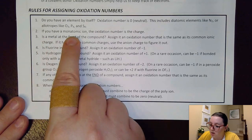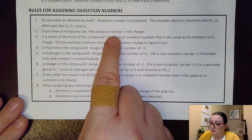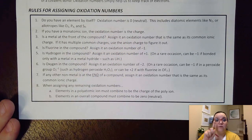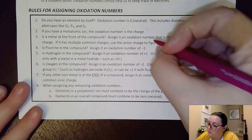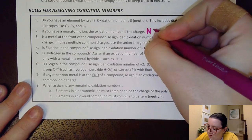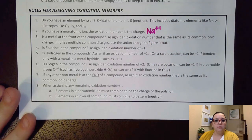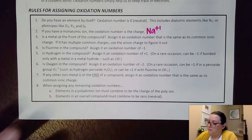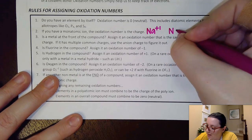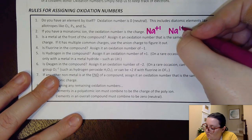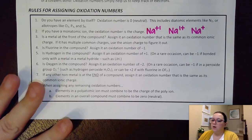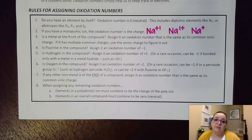If I have a monatomic ion — just one element in that ion — the oxidation number is the charge. For example, if they show sodium plus one, the oxidation number is plus one. Whether written as Na+1, Na 1+, or Na positive, all of those mean exactly the same thing.